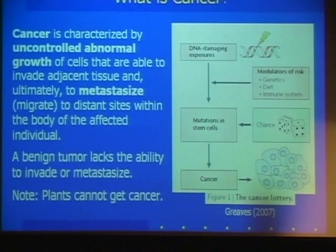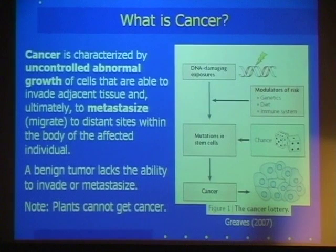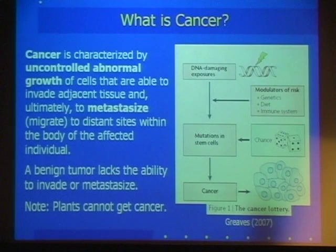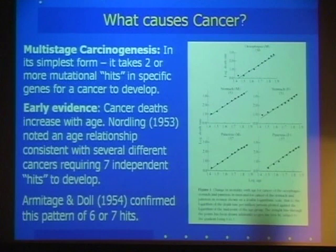What is cancer? This is essentially a medical definition. Cancer is characterized by uncontrolled abnormal growth of cells that are able to invade adjacent tissue and ultimately to metastasize — that is, to invade more distant sites. Benign tumors lack those abilities. An interesting aside: plants don't get cancer. Plants get tumors and they're actually extremely common, but plant cells have cell walls so they can't invade into tissue. If you're a plant, you do not have a problem with cancer.